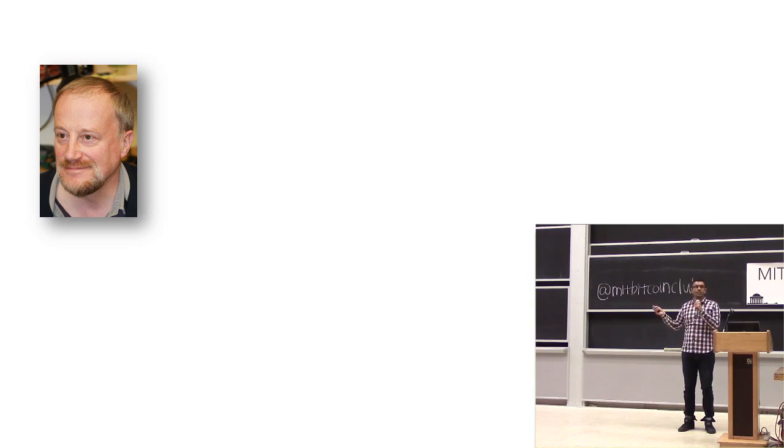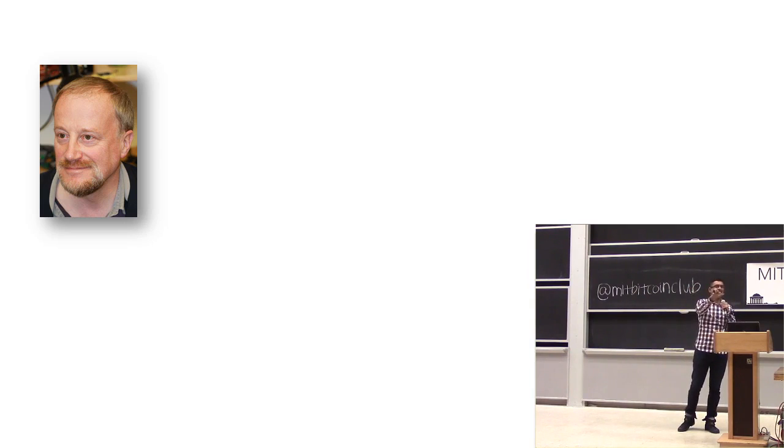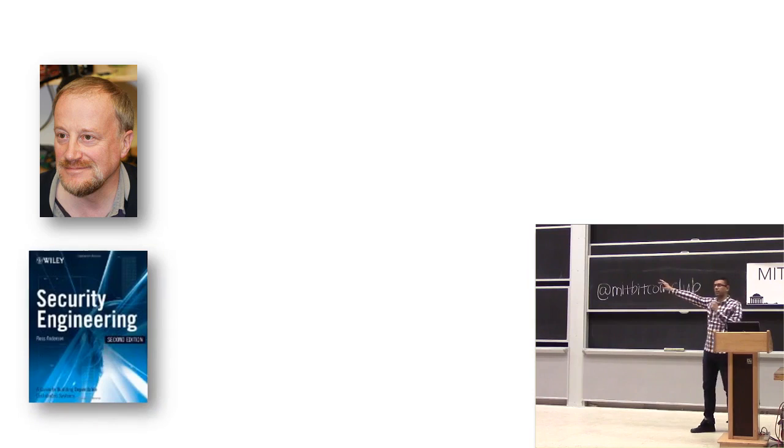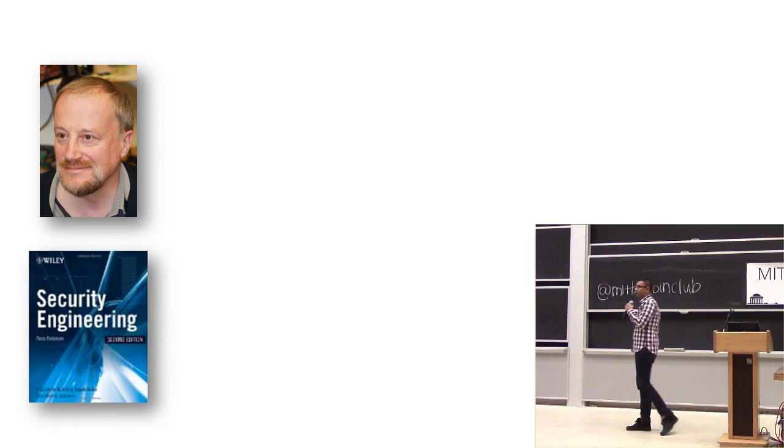Let me ask you a question: who recognizes this person? This is Ross Anderson. He is a towering figure in information security — a professor at Cambridge, particularly in the economics of information security. He's worked very deeply with bank security systems. If you're interested in Bitcoin security, you should read everything this man has written. In particular, he has a wonderful book, Security Engineering, available free online. I highly recommend Chapter 10, Banking and Bookkeeping — it has so many great insights.